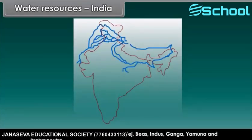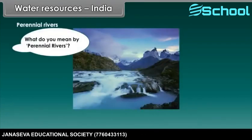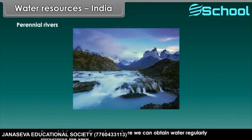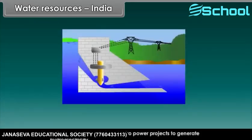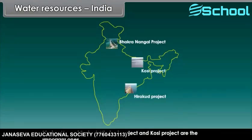India has many perennial rivers like Sutlej, Beas, Indus, Ganga, Yamuna, and Brahmaputra. Perennial rivers are those rivers where we can obtain water regularly throughout the year. India has also developed many hydropower projects to generate hydroelectricity, of which the Bhakra Nangal project, Hirakud project, and Kosi project are the important ones.